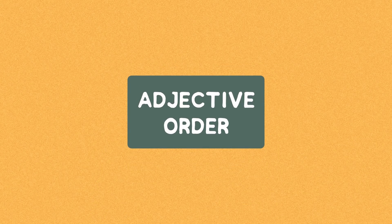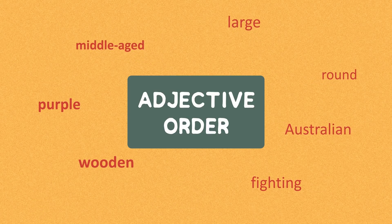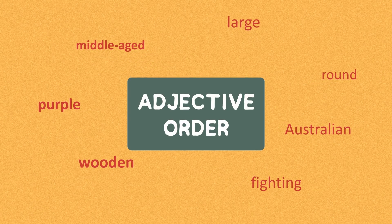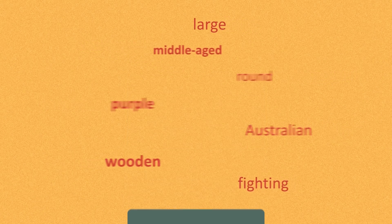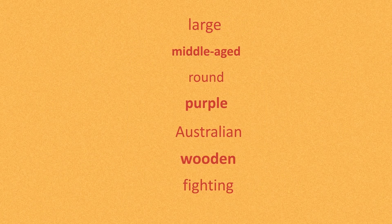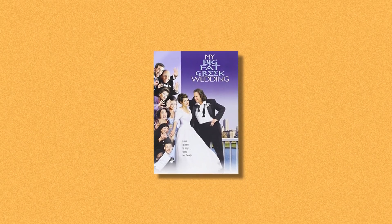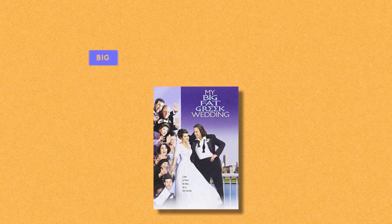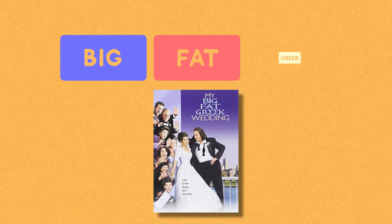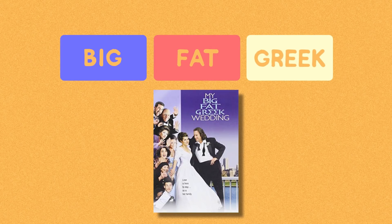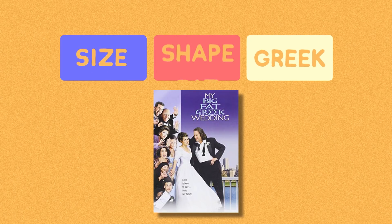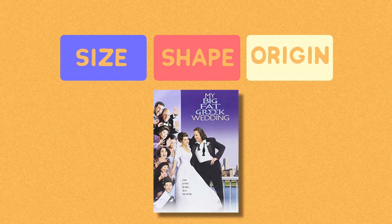Without realising it, when we describe something with multiple adjectives, we actually arrange them into an order by type. Looking at the title My Big Fat Greek Wedding, the three adjectives are arranged by type, in the order of size, shape, origin.